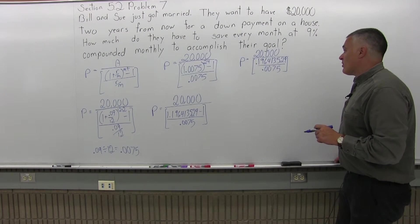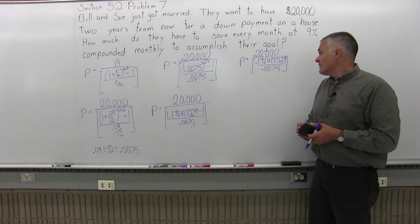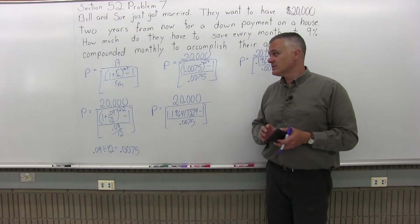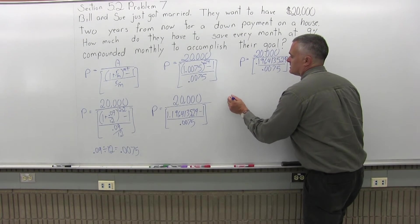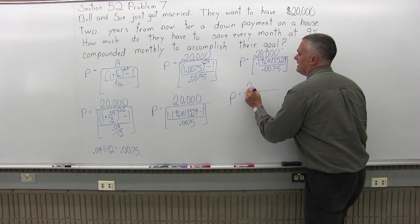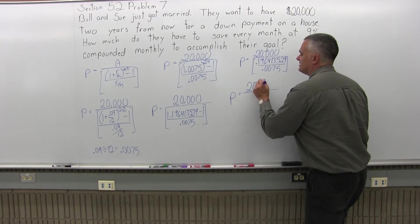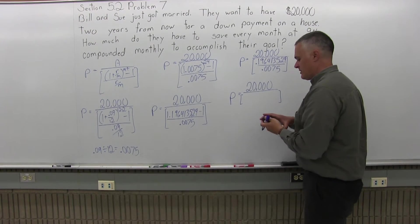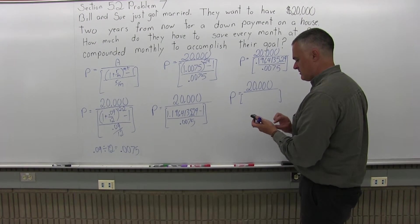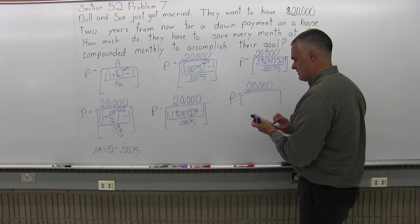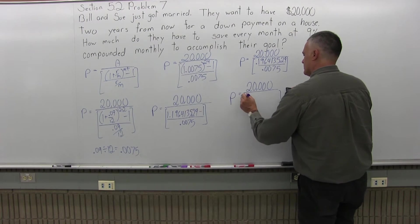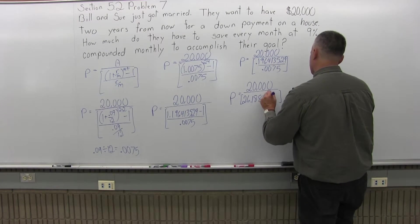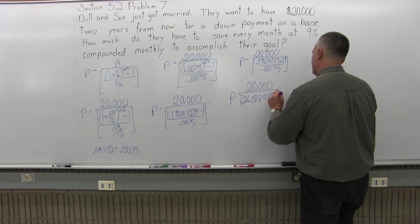So now, if I divide 0.196413529 divided by .0075, I'll get the value in the brackets down to one number. So that'll give me P equals 20,000 over some brackets with the number 26.18847059.